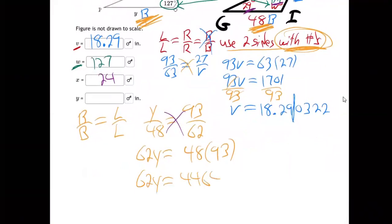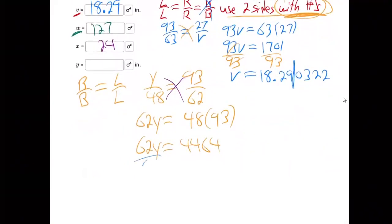Last step, divide by 62, and Y equals 72.